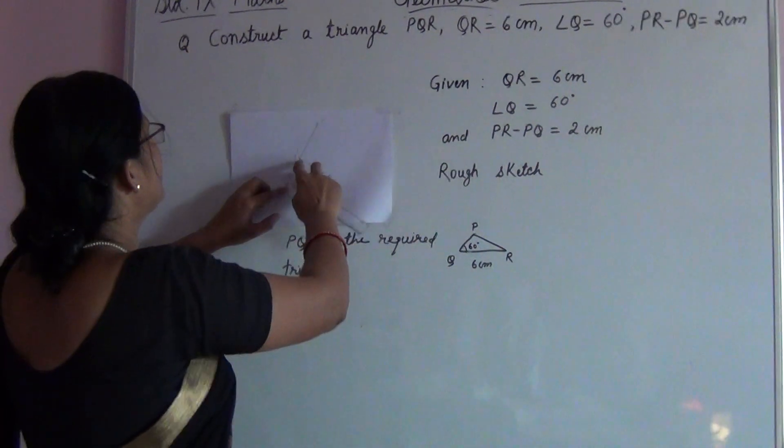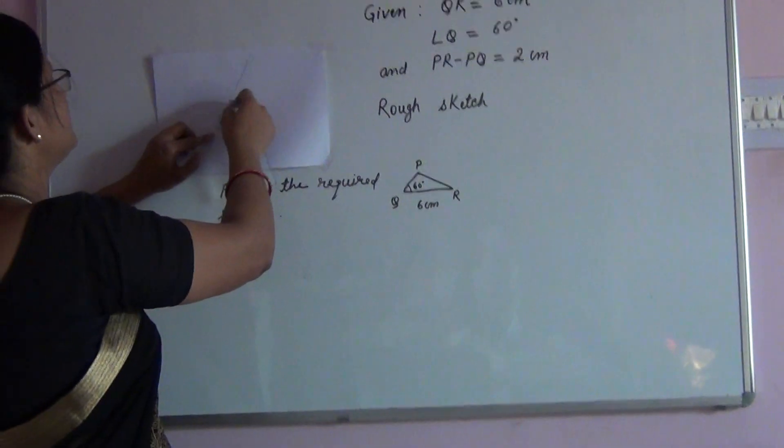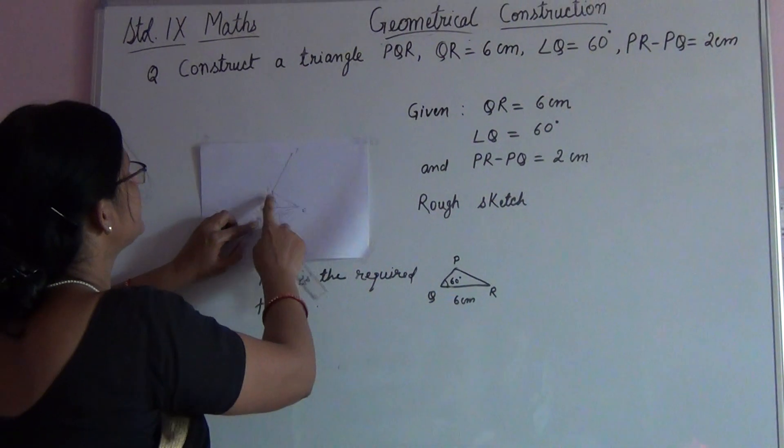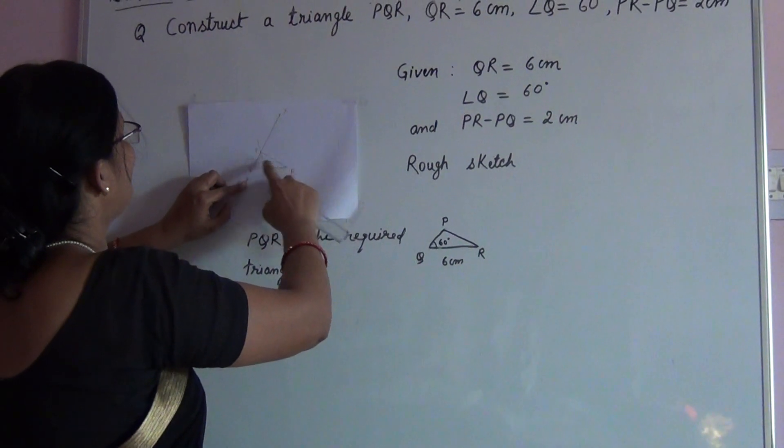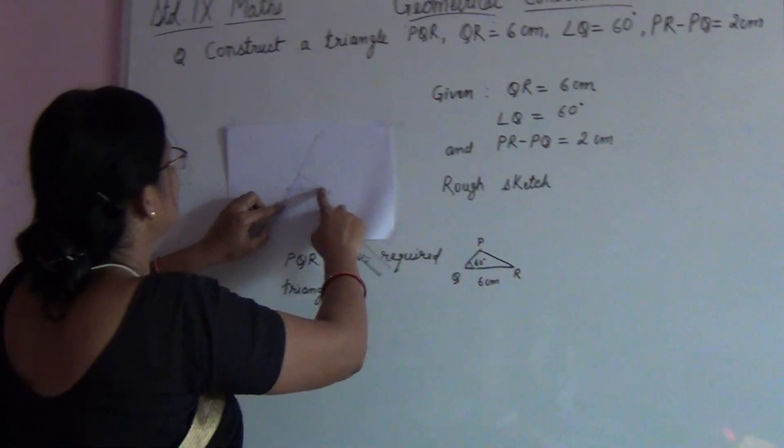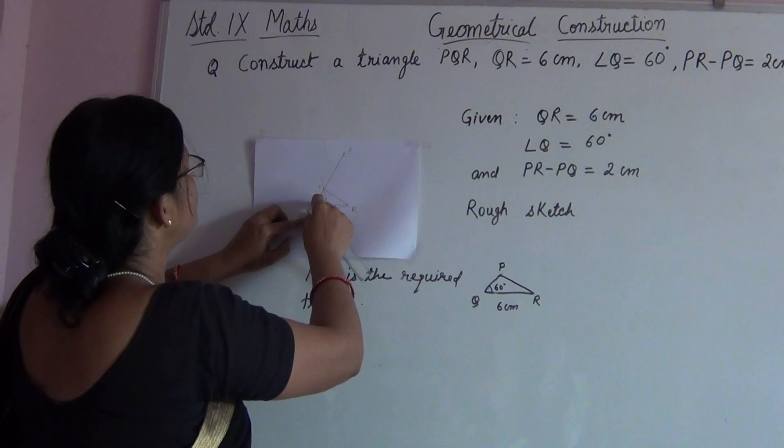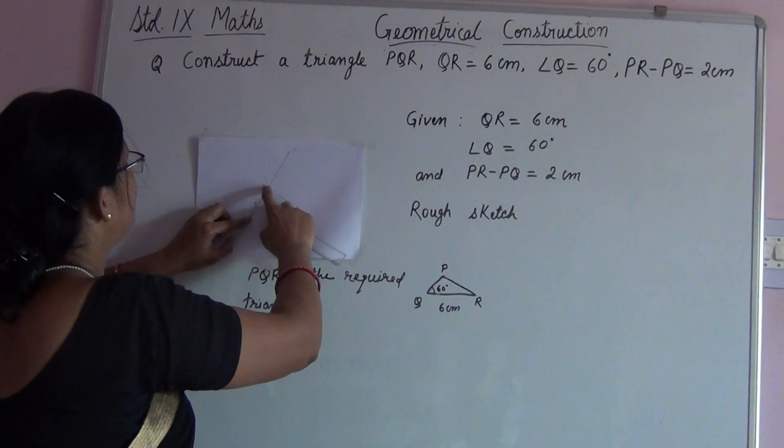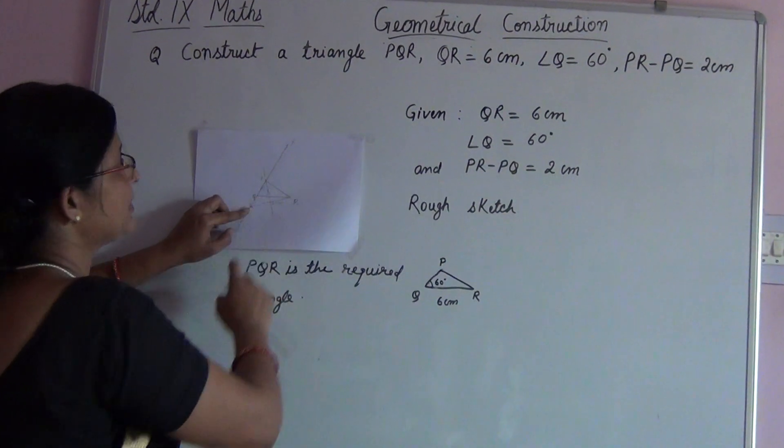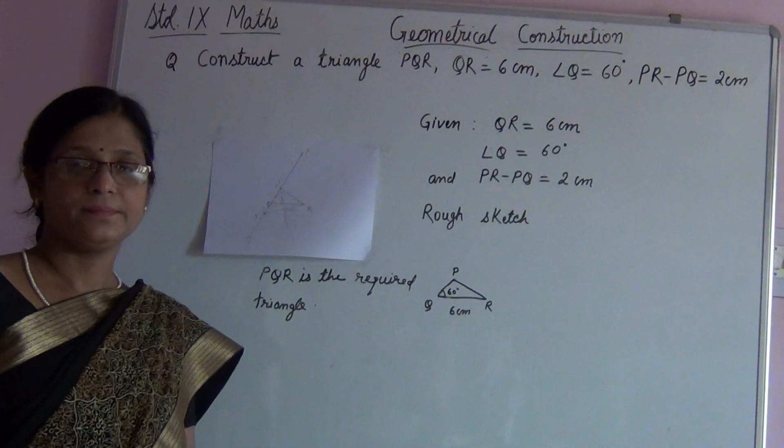Also, we know that this distance is 2 cm because PT and PR, they are exactly equal. P lies on the perpendicular bisector of TR. So PT and PR are equal, and this distance is equal to 2 cm. Understood. So this line PR minus PQ is also 2 cm. Okay. Thank you.